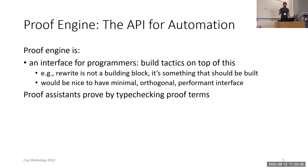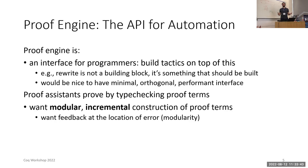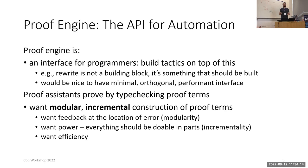Proof assistants prove things by type checking proof terms. What we want from a proof engine, what we want from this basic interface, is modular incremental construction of proof terms. We want modularity because we want feedback at the location of error. We also want incrementality. Everything should be doable in parts. You shouldn't have to leave the proof engine to construct your proof term and then give it all at once with recline. Finally, we want to do this all efficiently because the performance of the fundamental building blocks is what determines the performance of the tactics built on top of them.